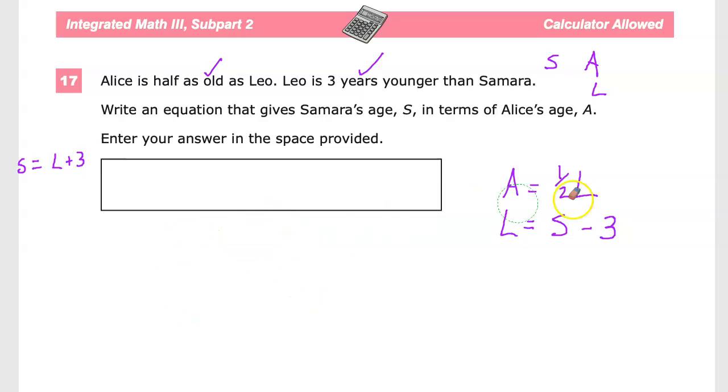So, if I want to rewrite that over here, and just to keep everything looking reasonable, I will. Now, that's pretty helpful. We already have something for Alice, so let's see if that's useful to us. Well, the problem is the variable that's used in the equation that defines Samara's age is Leo's variable, not Alice's variable.